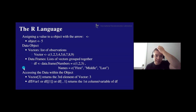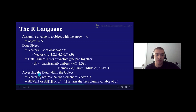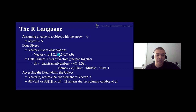We can access data within an object. To access the third element of a vector, we use the vector name with square brackets and the index number — vector[3] returns the third element. For a names vector, names[3] would return 'last.' This is useful when you have a vector of results: the first might be the mean, second the variance, third the standard deviation — and you can pull each out by index.